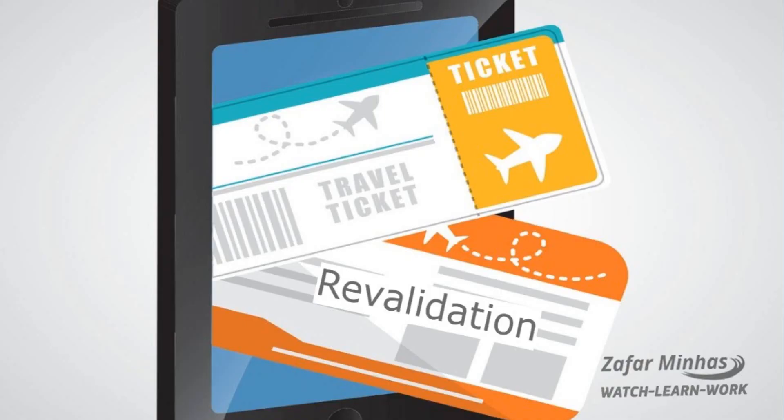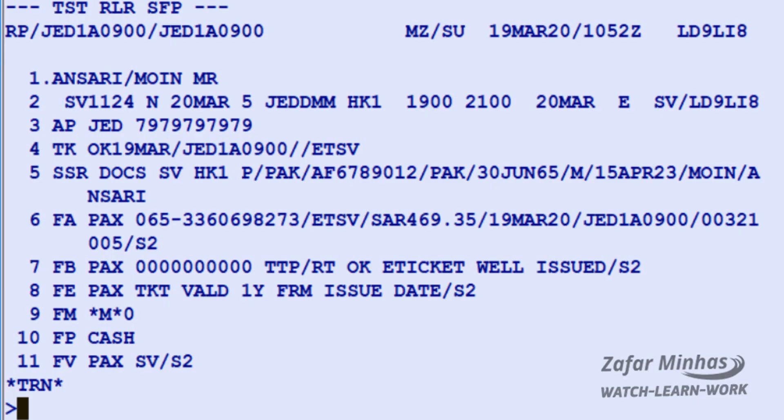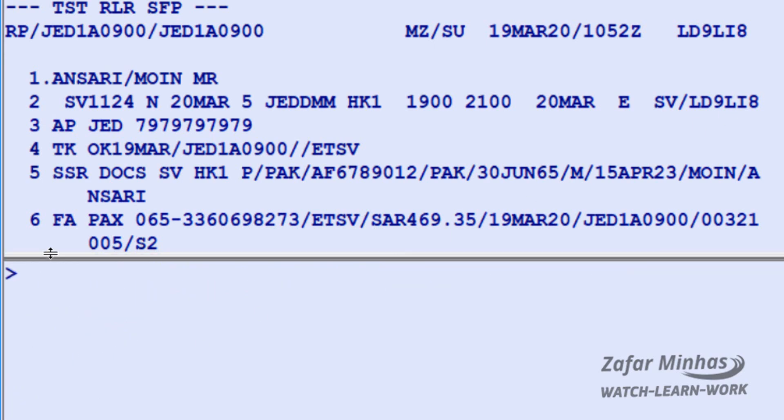In our example, after an issued electronic ticket, the passenger has changed their plan and would like to change the date of travel from Jeddah to Dammam on March 19. Before changing the reservation in the existing PNR or creating a new PNR, it is recommended to check coupon status first.